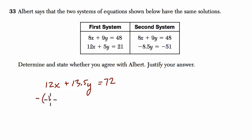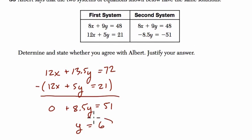And then if we subtract the second equation from the first, we'll cancel out the x terms and we can solve for y. So that's going to give us, when we subtract it, 0 plus 8.5y equals 51. And if we divide both sides by 8.5, y is 6.